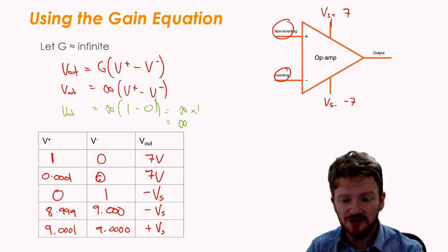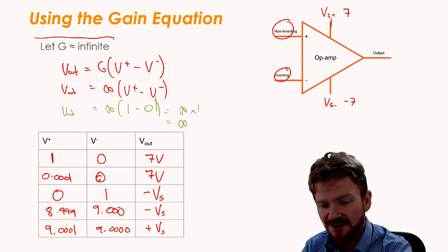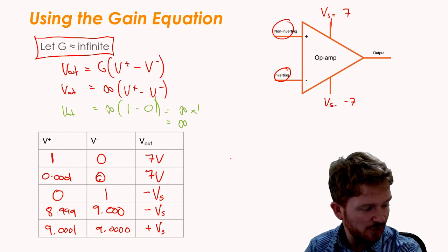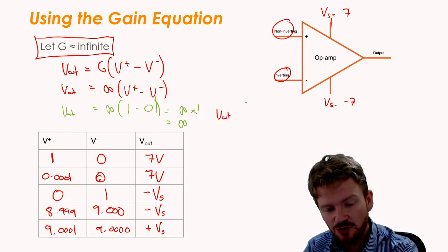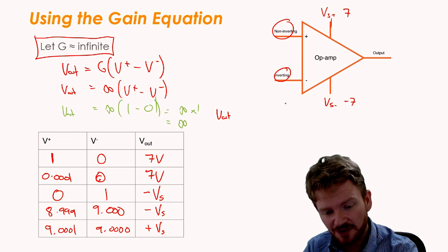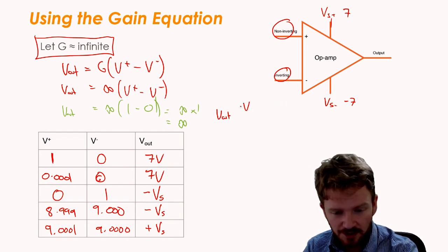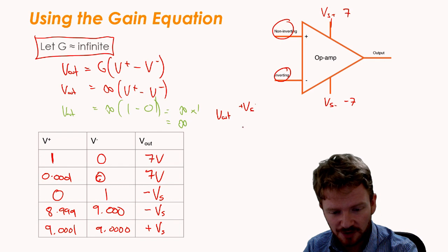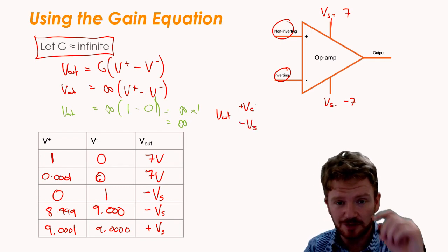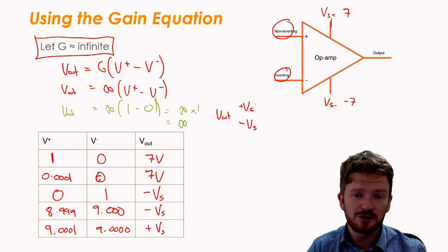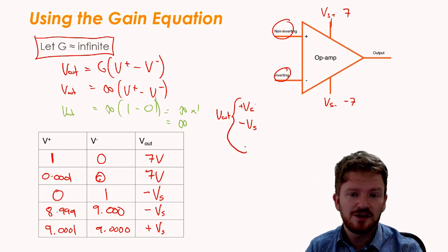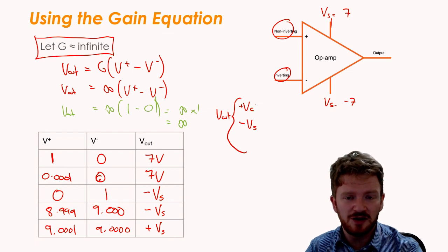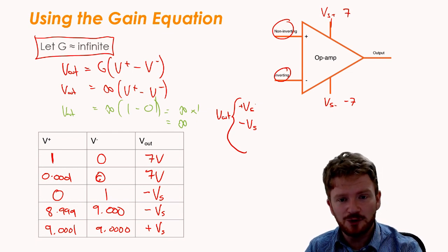Hopefully, you also notice that provided gain is infinite, Vout is usually going to be either the positive supply voltage or the negative supply voltage because most of the time in a real circuit, one input will be larger than the other, except for a special case.